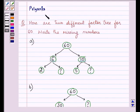Hi and welcome to the session. I'm Priyanka and I'll be helping you with the following question which says here are two different factor trees for 60. Write the missing numbers.